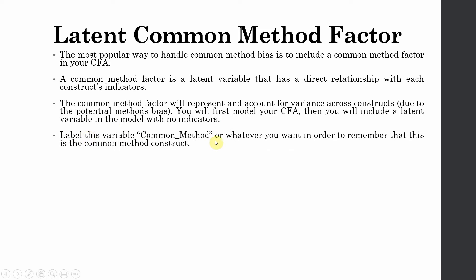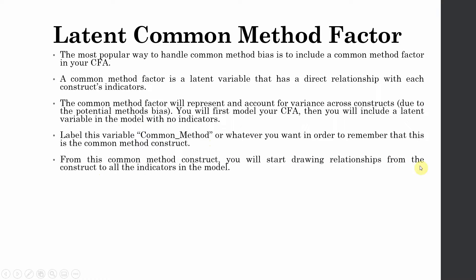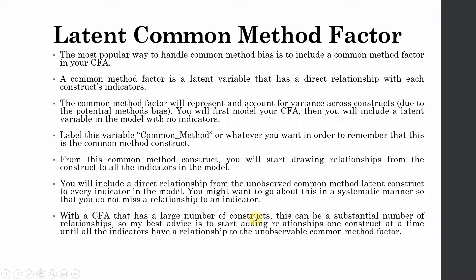Label this variable as 'common method' or whatever you want, so you remember this is a common method construct. From this construct, draw relationships to all the indicators in the model — a direct relationship from the unobserved common latent construct to every indicator. Go about this in a systematic manner so you do not miss any indicator. With a CFA that has a large number of constructs, this can be a substantial number of relationships, so add relationships one construct at a time.